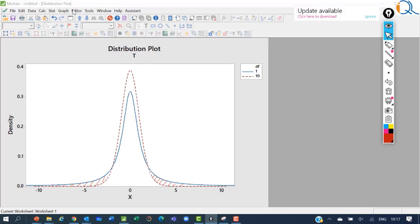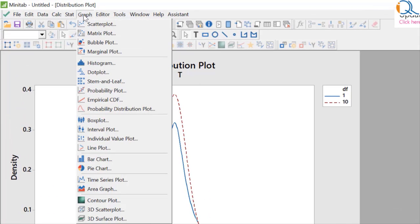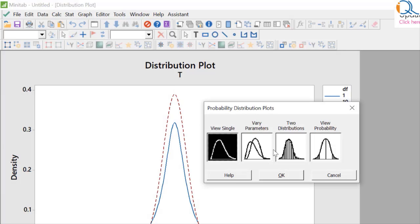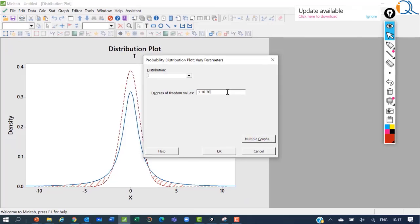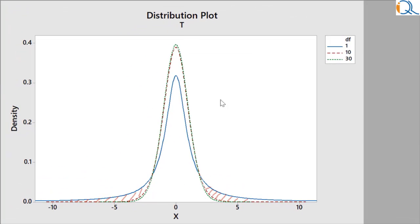As we increase the degrees of freedom, the T distribution approaches normal distribution, especially after the degrees of freedom increase beyond 30. So let us see that in the same command graph probability distribution plot vary parameters. And now instead of 1, 10, I will first add 30. So you can see that the one with 30 and the one with 10 degrees of freedom do not have so much difference compared to 1 degree of freedom and 10 degrees of freedom.